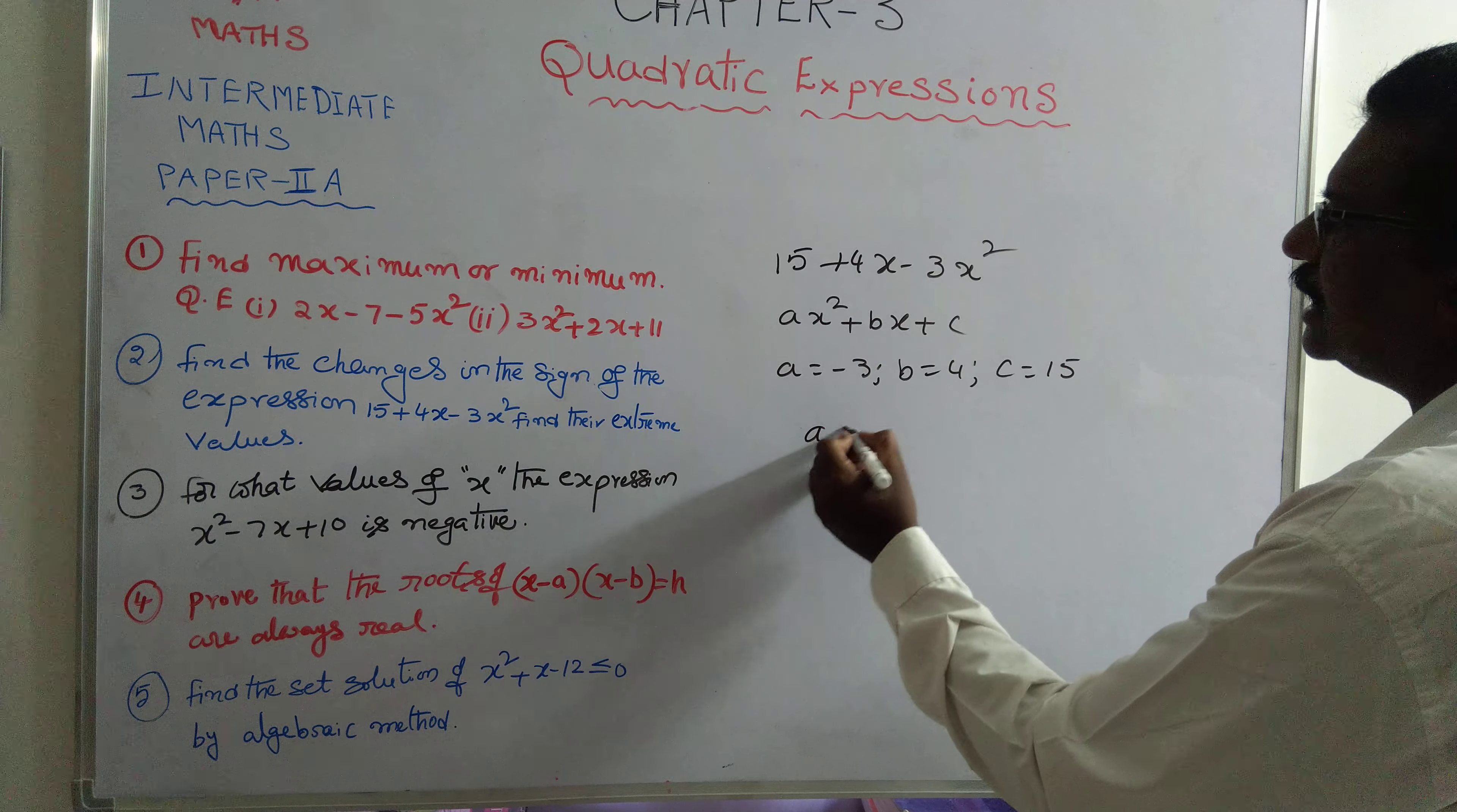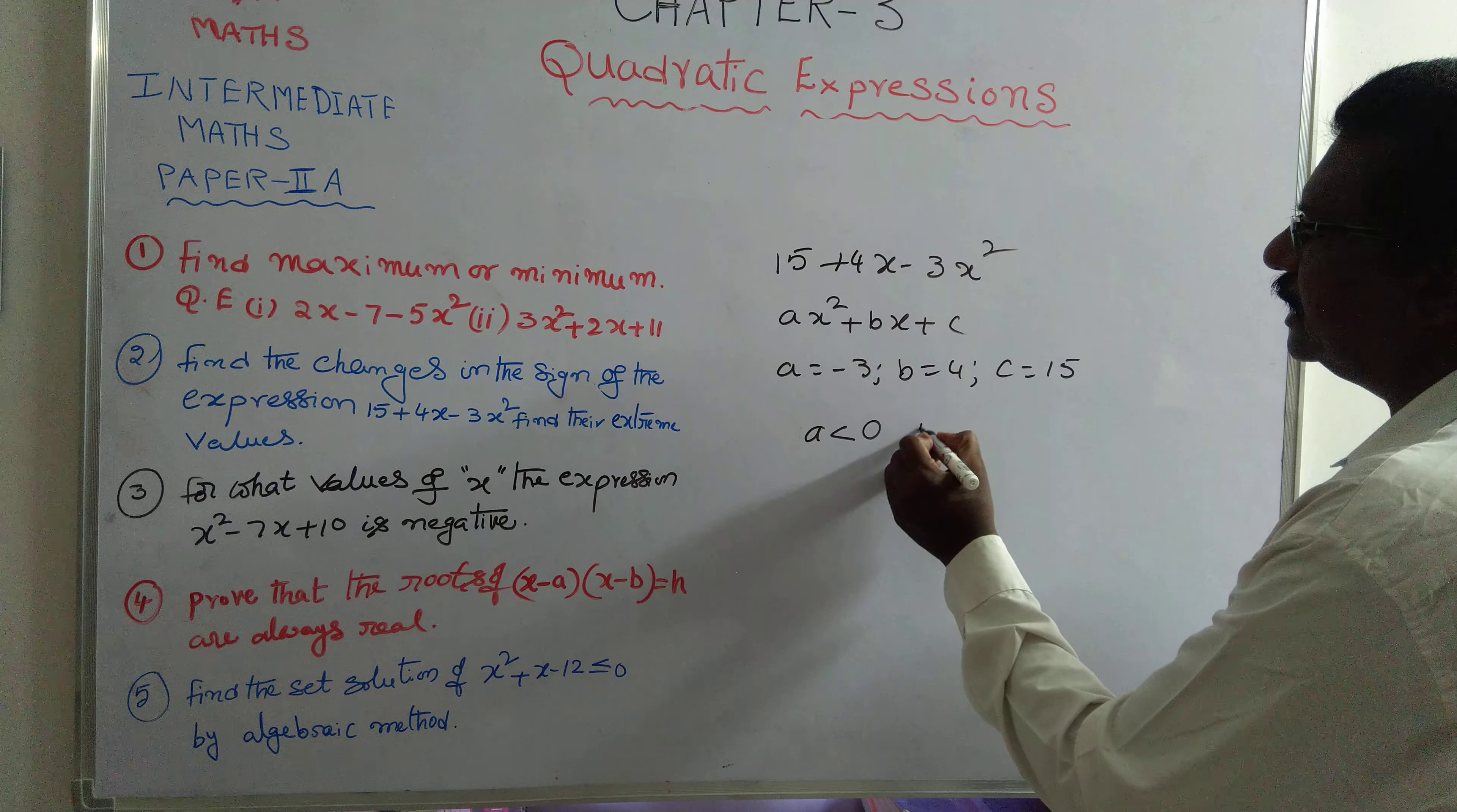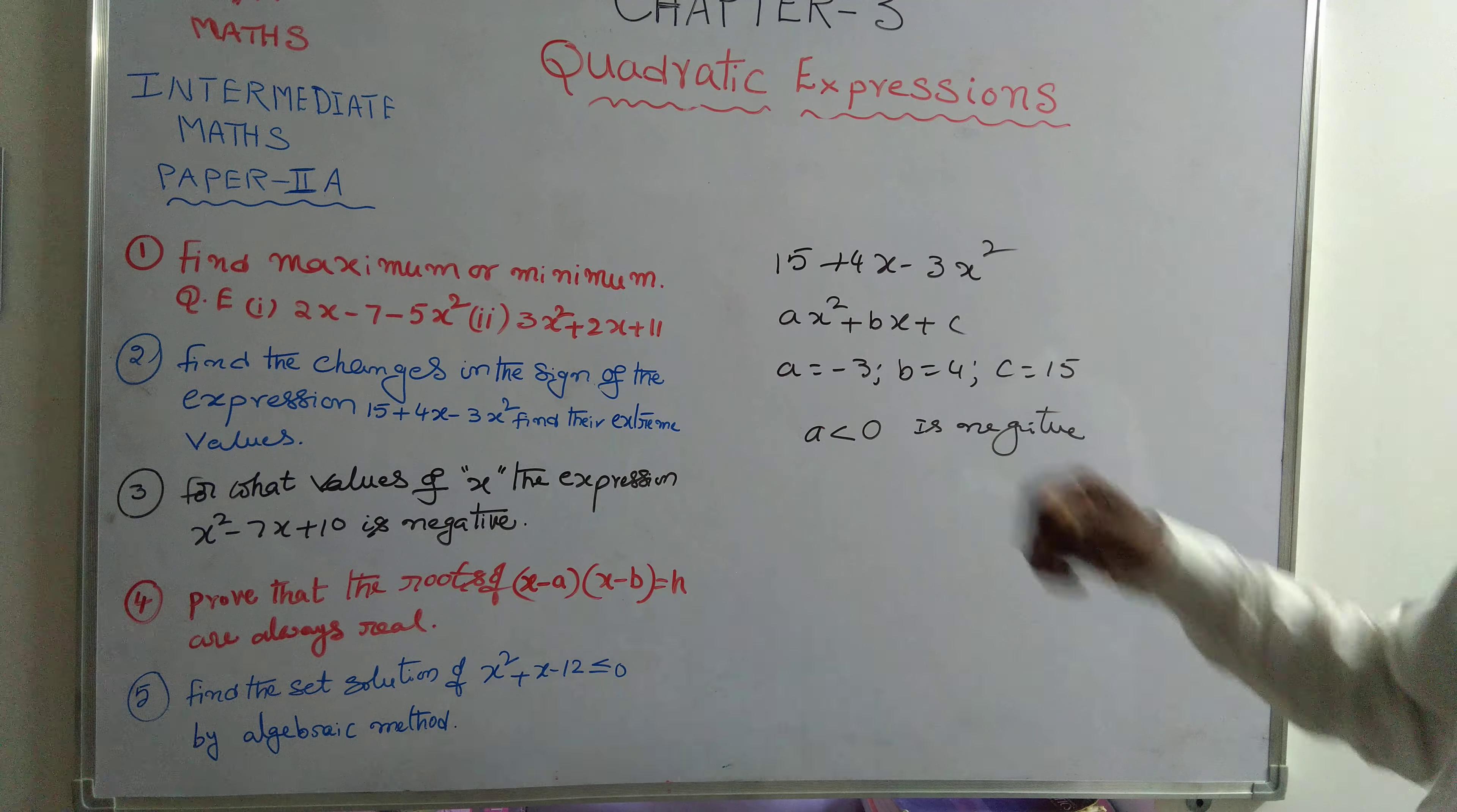a is less than 0. Less than 0 is negative value. Negative value is the minus 3.